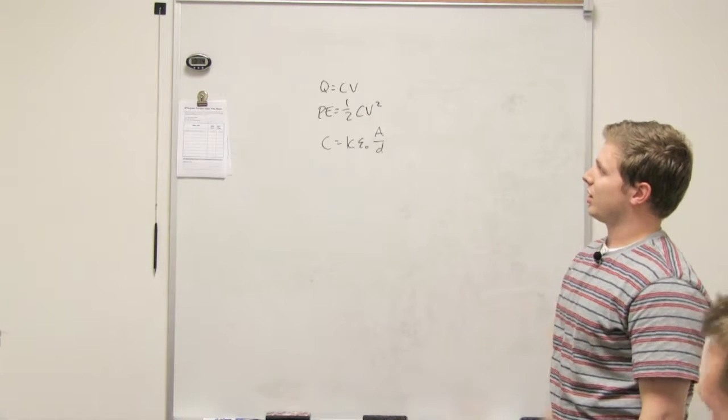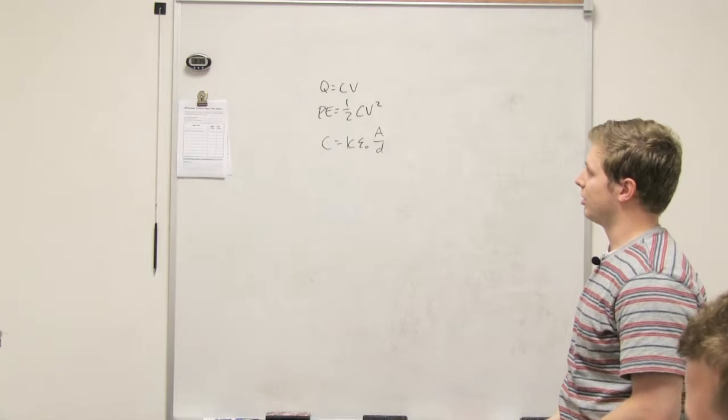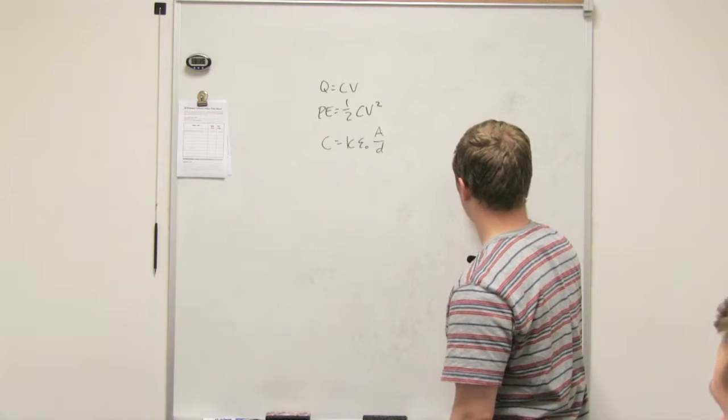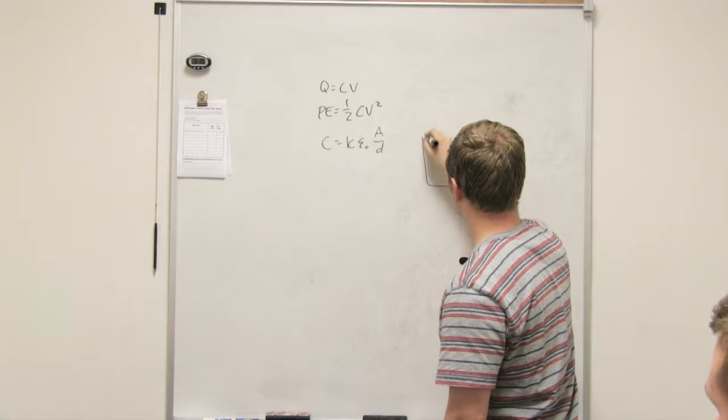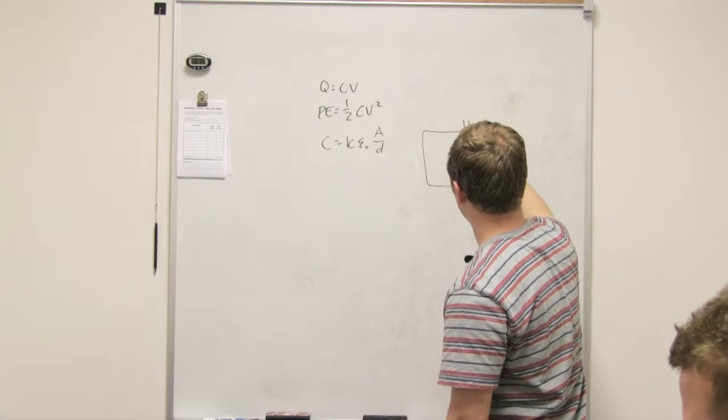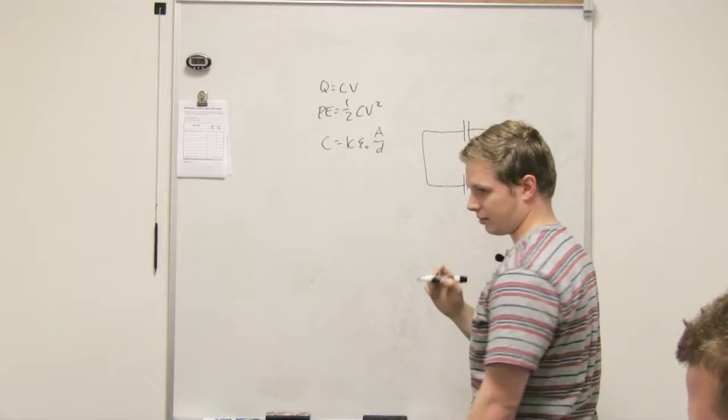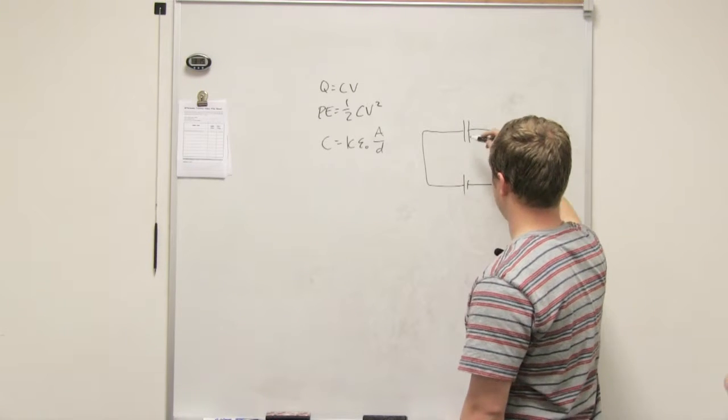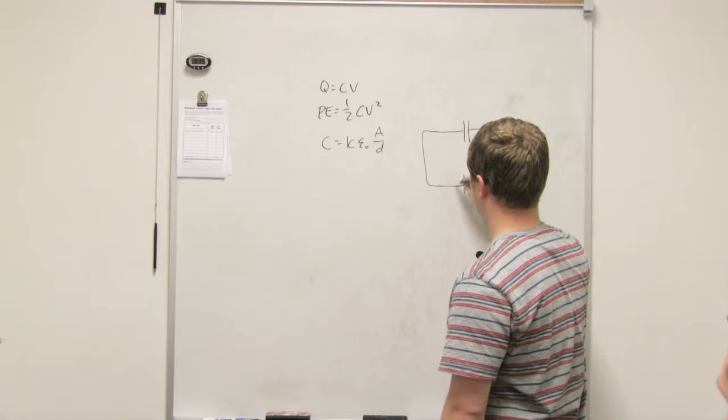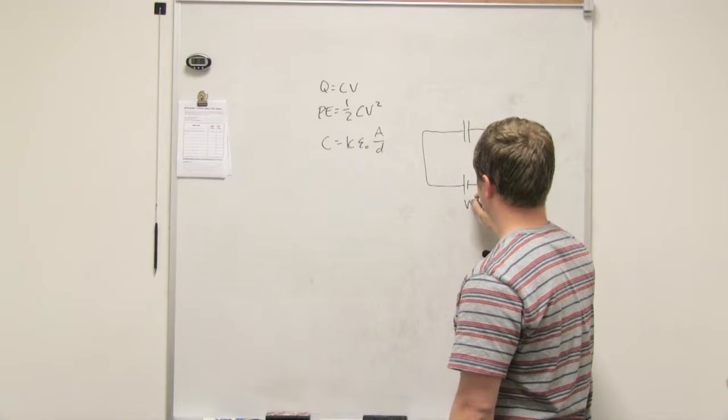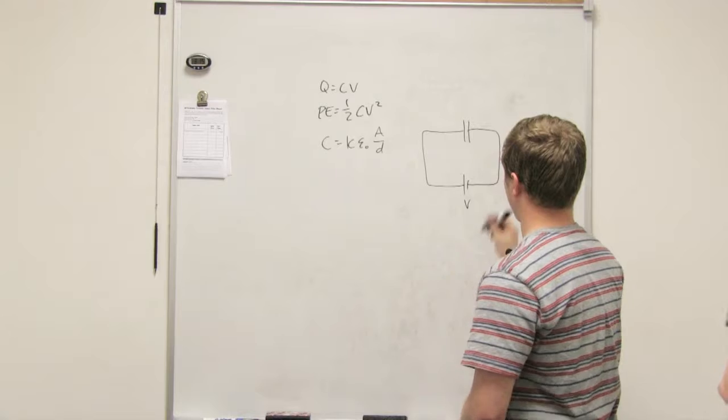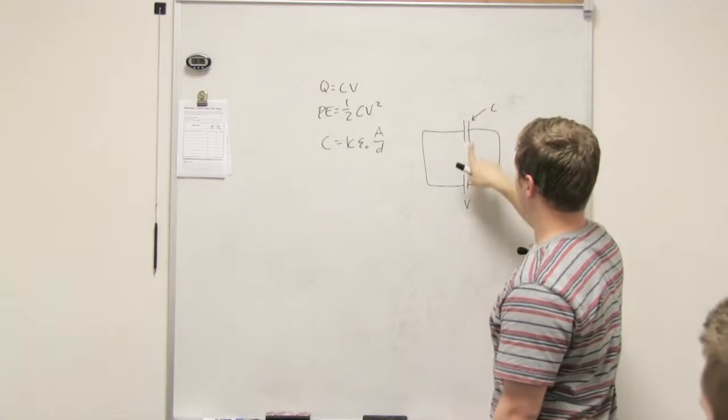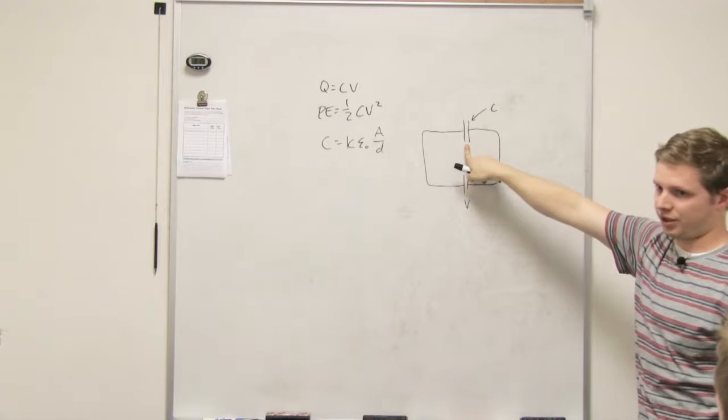So those are all pretty good capacitor equations. Okay, so you guys started talking about circuits. You'll notice in some of your problems you'll talk about capacitors on the circuit like this. And so what happens is you'll have a battery here with a certain voltage and you'll have a certain set capacitance on this guy, and this capacitor will build up charge.